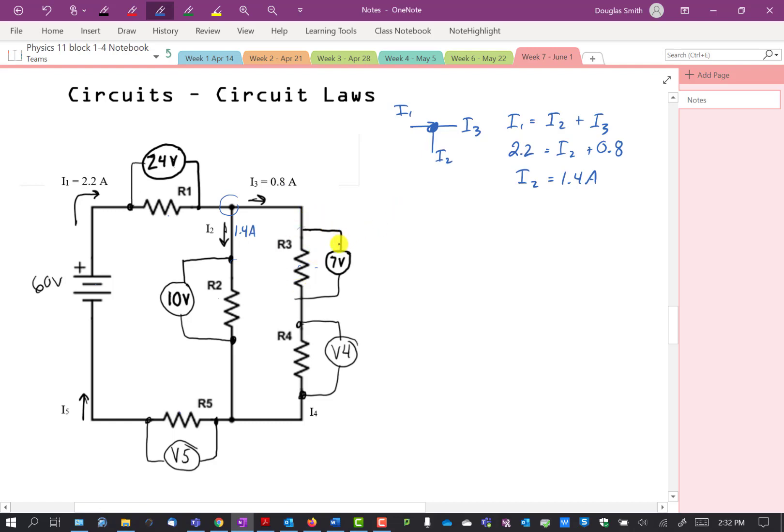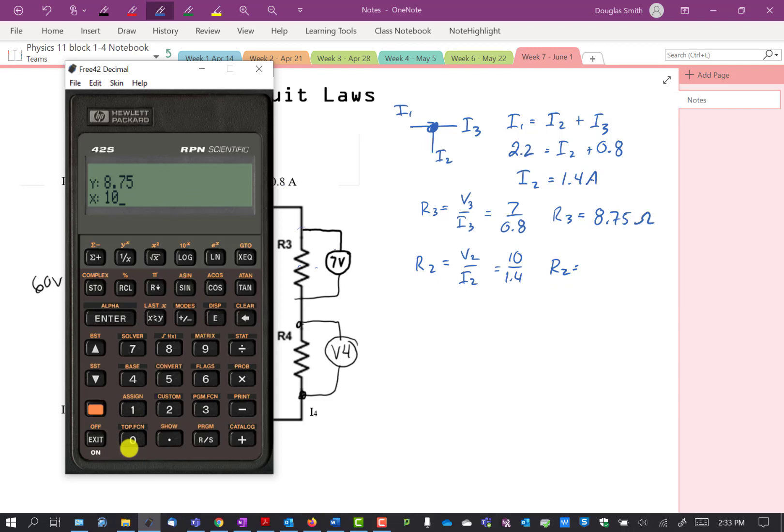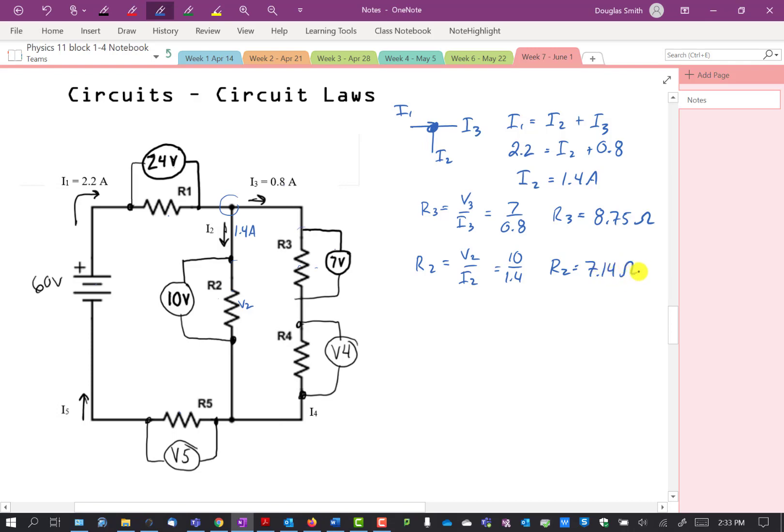All right. Let's check with this one right here. R3 is equal to V3 over I3. V3 is 7 volts. I3 is 0.8. So R3 is equal to 8.75 ohms. All right. What else do we know? Let's find R2. R2 is, call this V2, V2 over I2, 10 over 1.4. So that's 7.14 ohms.